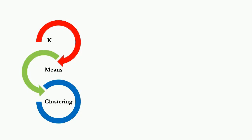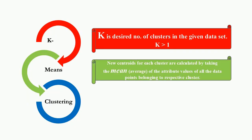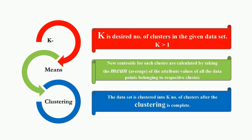Let us understand the K-means clustering word by word. K is the number of clusters and is required as an input; K should always be greater than 1. The averaging method is used to generate new cluster centers.